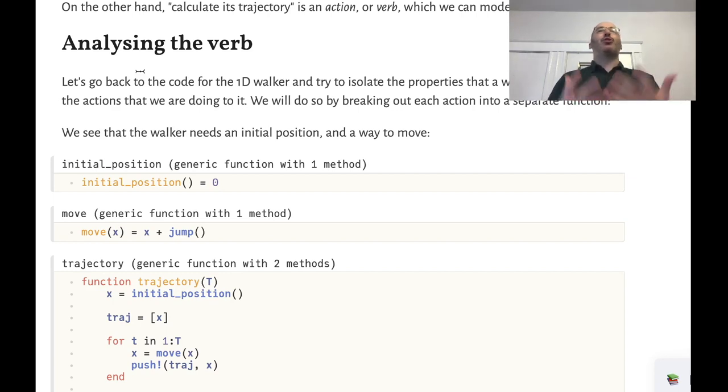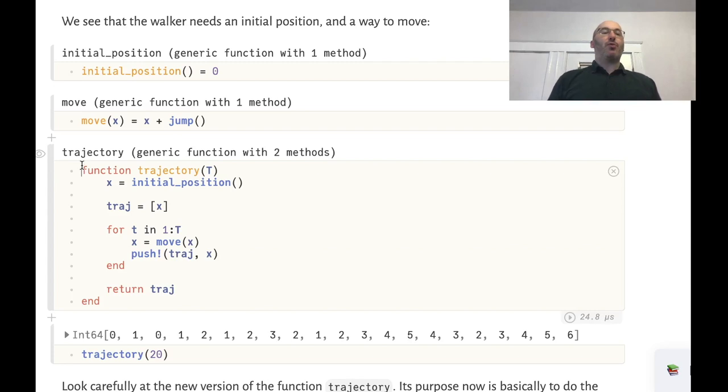We want to do that to the objects. We're going to rewrite the function by splitting out the functionality into separate functions. So let's have a function called initial_position which just returns zero for now and we'll have a function move which accepts the current value of x and makes it jump.